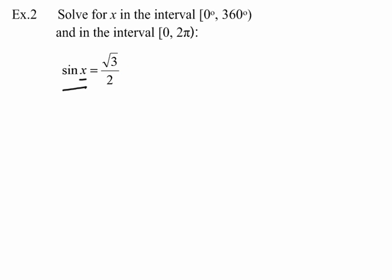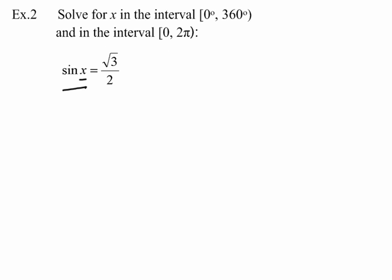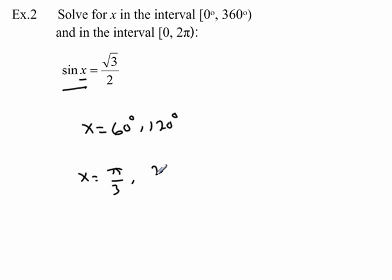We want to find all angles x such that sine of x equals √3/2. This is where the unit circle is handy. We're looking for places where the sine — the y-coordinate — equals √3/2. There are two such places: x could be 60 degrees or 120 degrees, and in radians x could be π/3 or 2π/3.